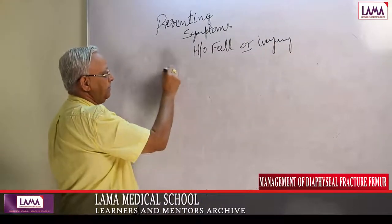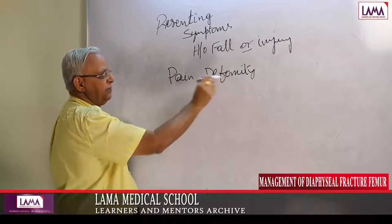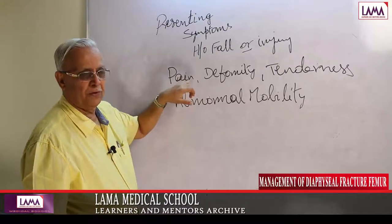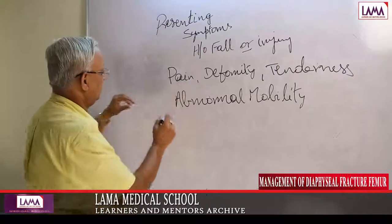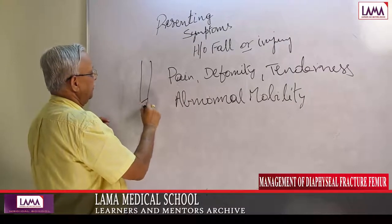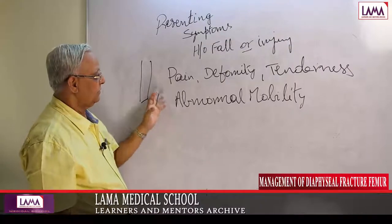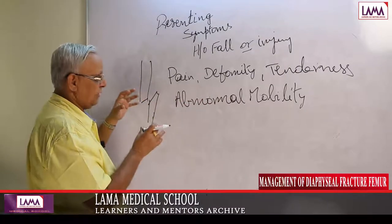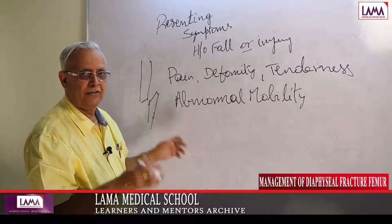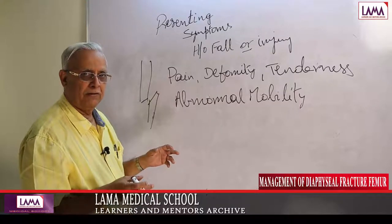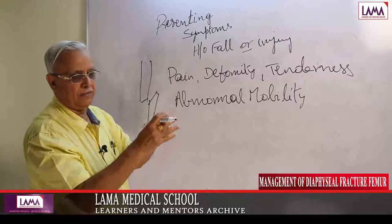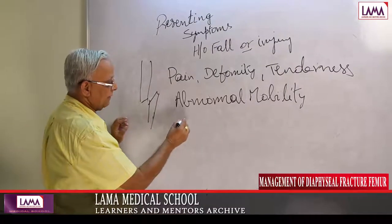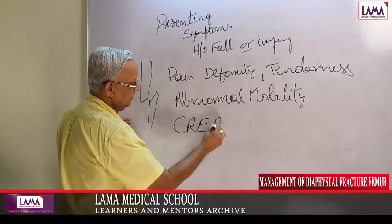They come with pain, deformity (very much apparent), tenderness, and abnormal mobility. Any fracture produces a hematoma, causing pain. If there is a fracture and the bones get displaced, the patient has deformity. If you touch the area, they wince with severe pain — that is tenderness. If you try to move the limb, normally movement occurs at the joint, but here in the thigh you see abnormal mobility, and the rubbing of fragments against each other produces crepitus.